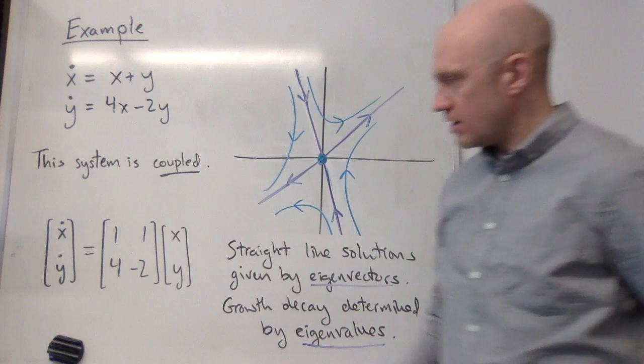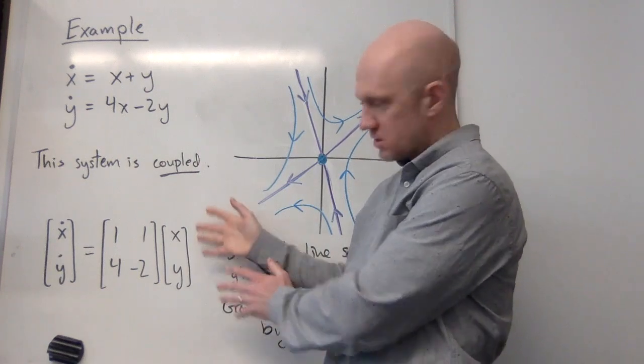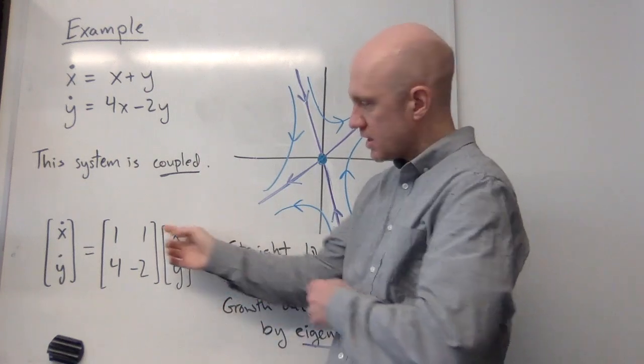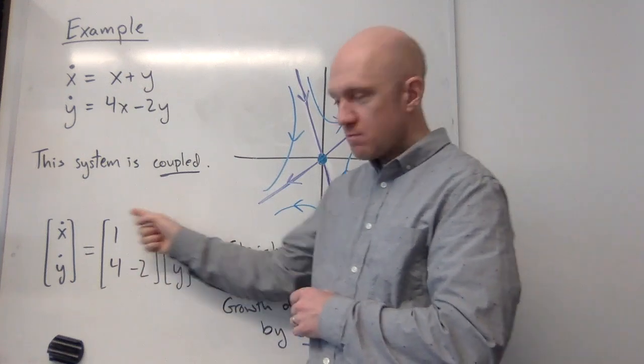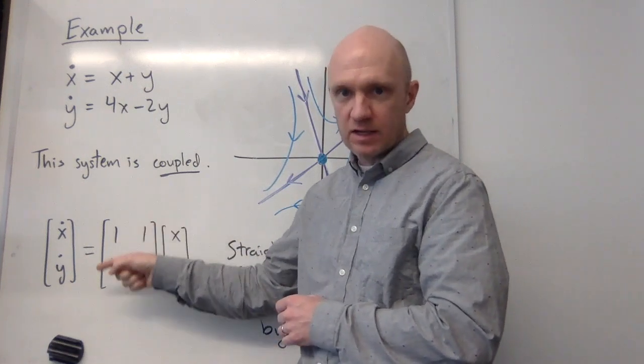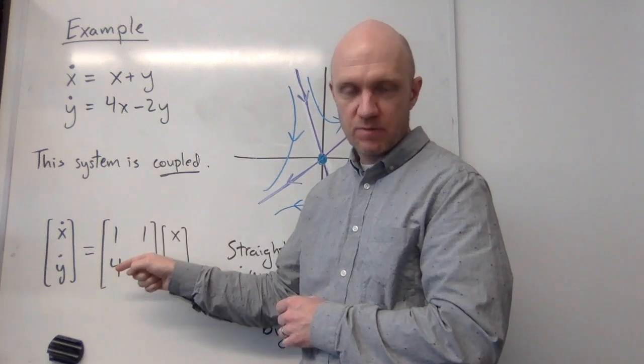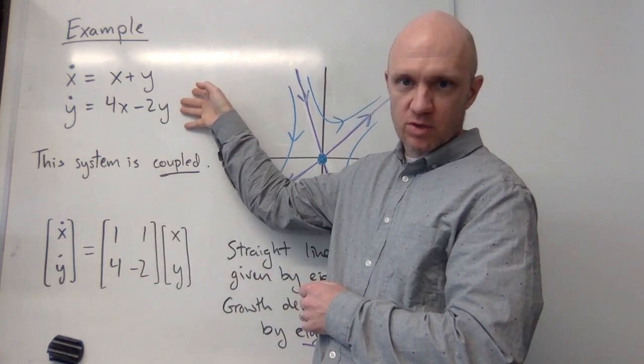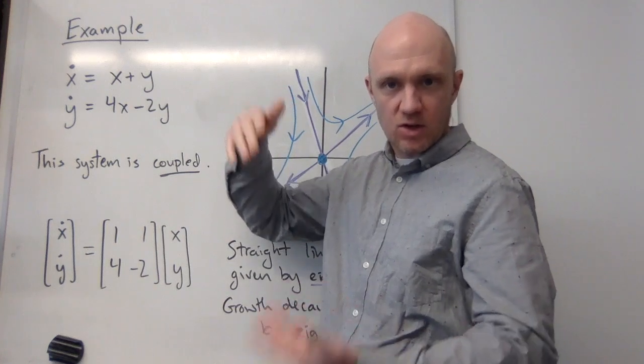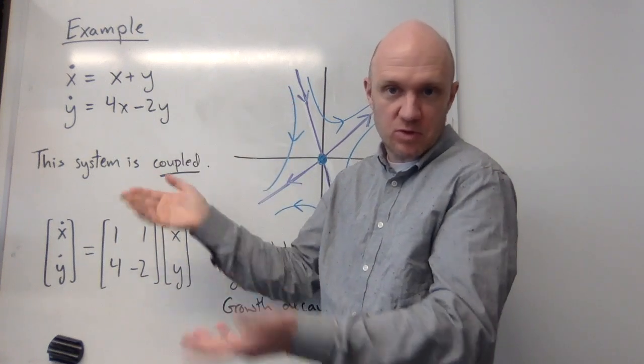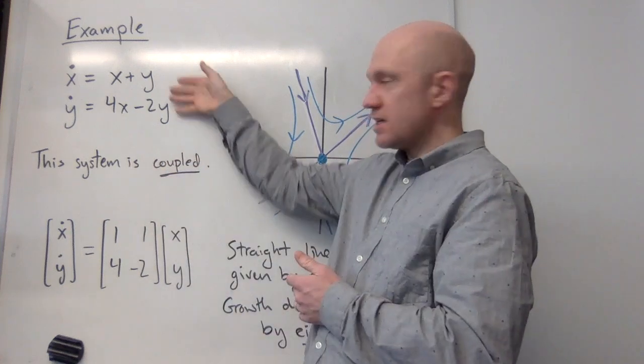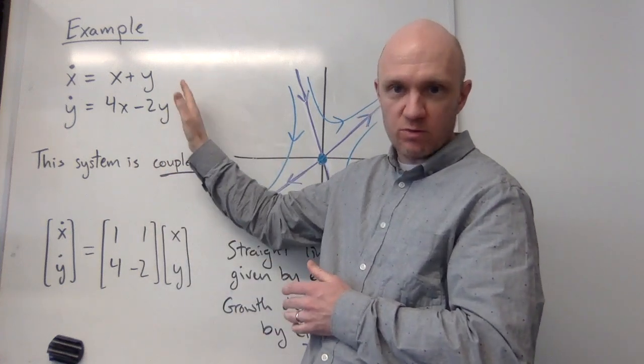Now, I can write this in matrix form just as kind of a notational reminder, just like this, and I get this matrix 1, 1, 4, minus 2. This matrix is going to be the key that unlocks the understanding of this equation. I cannot just solve these things individually like I did in earlier examples in order to write down what the phase portrait looks like or understand the solutions. These things are coupled together, this is a totally new phenomenon.